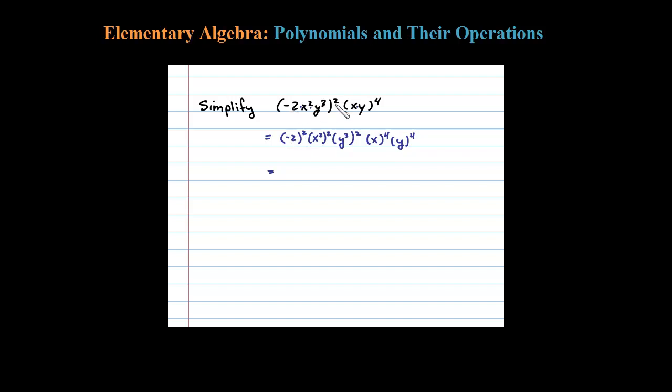Here because it's actually negative 2 squared, and we know negative 2 squared is positive 4. We take power to power, you multiply. So 2 times 2 is 4, that's x to the fourth, and then y to the sixth.